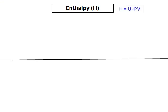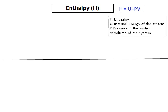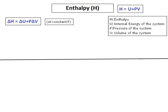Enthalpy is given the symbol H and it is equal to U plus PV, where H is the enthalpy, U is the internal energy of the system, and P and V are the pressure and the volume of the system. If I take the change in enthalpy, I get delta H equals delta U plus P delta V when the pressure is kept constant.